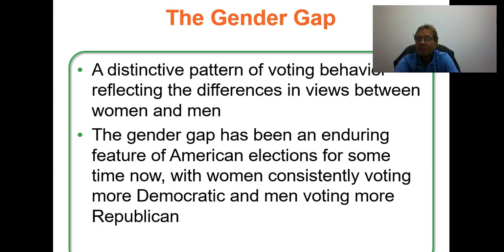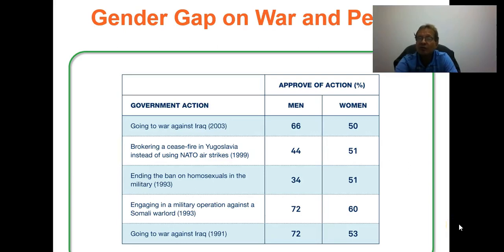The gender gap — please be familiar with this. Women, right through the 2016 results, tend to vote Democratic, and men tend to vote more Republican. The gender gap still exists as of 2017. Women tend to vote Democratic mainly because many of the services and planks offered by the Democratic Party are issues that women identify with.